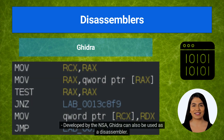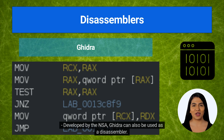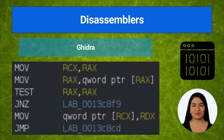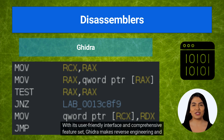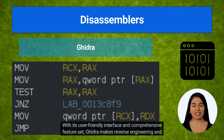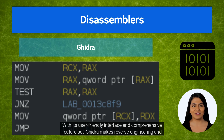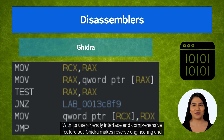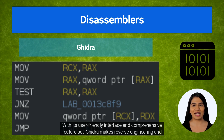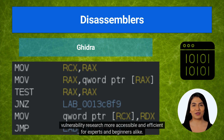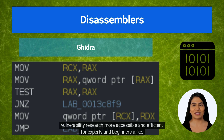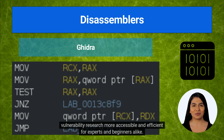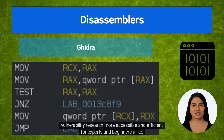Developed by the NSA, Ghidra can also be used as a disassembler. With its user-friendly interface and comprehensive feature set, Ghidra makes reverse engineering and vulnerability research more accessible and efficient for experts and beginners alike.